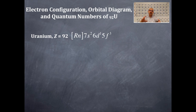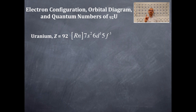The noble gas for Uranium is Radon. So the noble gas notation is [Rn] 7S2, 6D1, 5F3. We're going to write this another way, and we're also going to get the number of valence electrons. Valence electrons — think about how many you've got: that's the largest quantum number, S and P orbitals only.